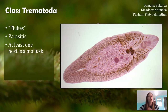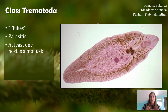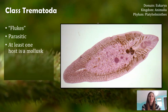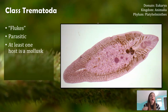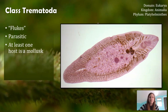Within Class Trematoda, all of these organisms are parasitic. All of them have at least one host, and if they have a host — whether one or multiple in their life cycle — one of those hosts will be a mollusk. If you haven't watched the mollusk videos yet, this includes organisms like snails and slugs, octopi and squid, clams and oysters. All of those are found within Phyla Mollusca, as well as quite a few others.